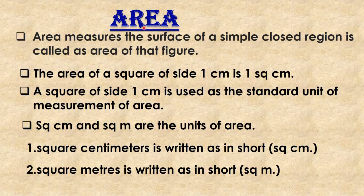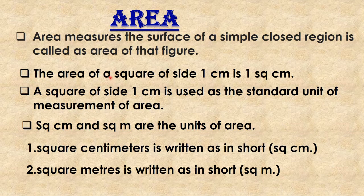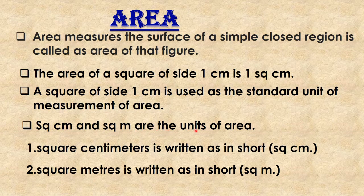Now let us learn about area. Area measures the surface of a simple closed region, called the area of that figure. The area of a square of side 1 cm is 1 square cm. A square of side 1 cm is used as the standard unit of measurement of area. Square cm and square meter are the units of area, written in short as sq cm and sq m respectively.